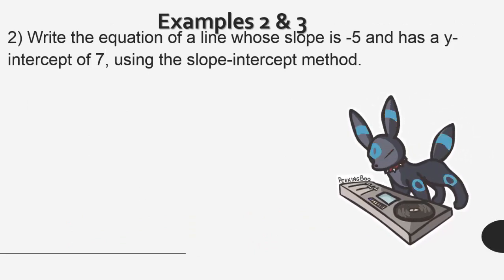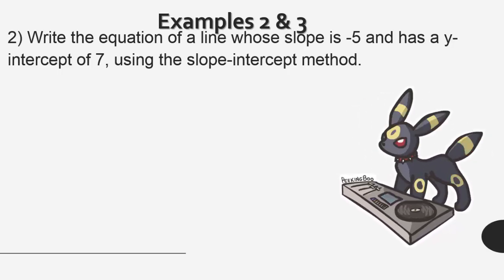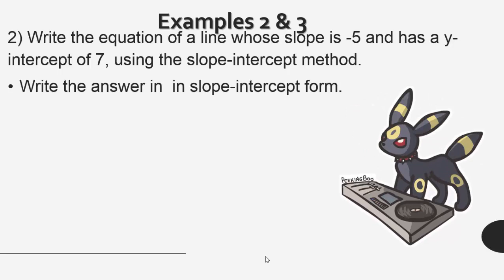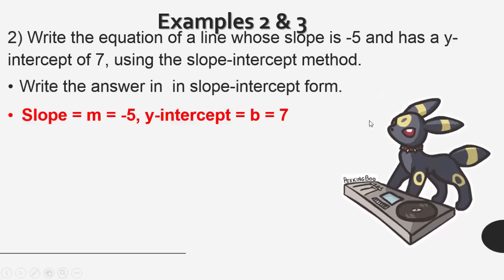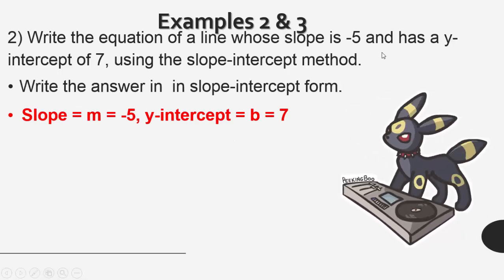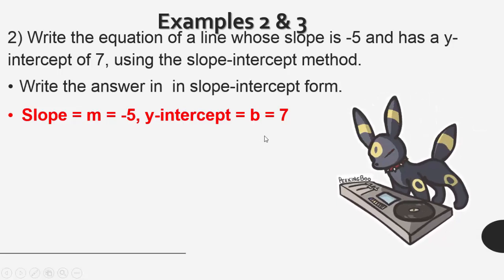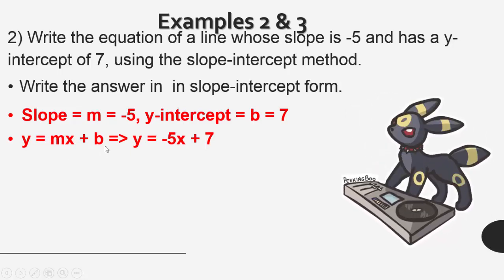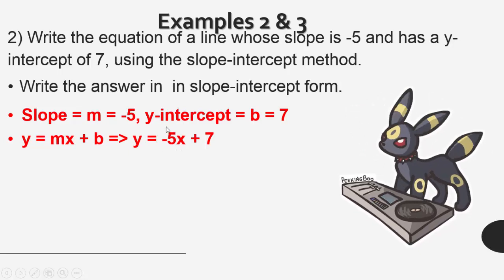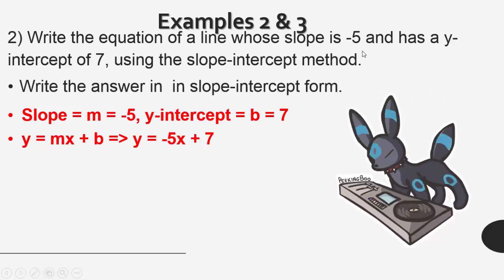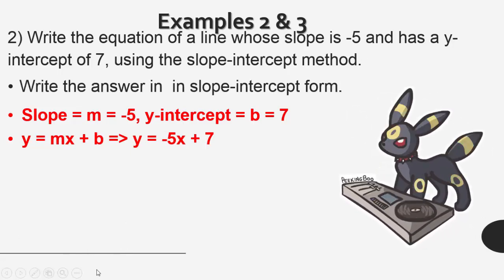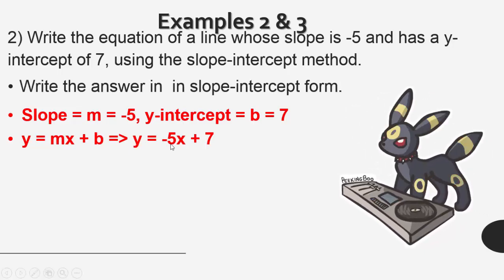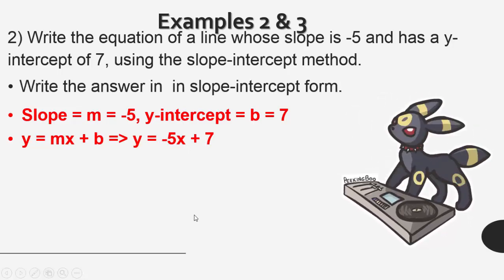In example number 2, we're asked to write the equation of a line whose slope is negative 5 and has a y-intercept of 7 using the slope-intercept method. We're given that the slope M is equal to negative 5, and the y-intercept B is equal to 7. So we use the formula y is equal to Mx plus B, plug in M as negative 5 and B as positive 7.